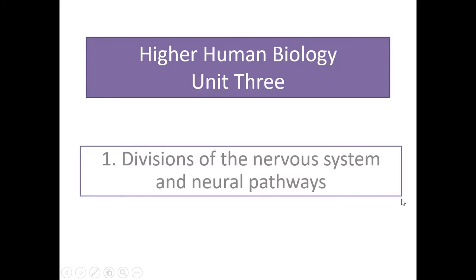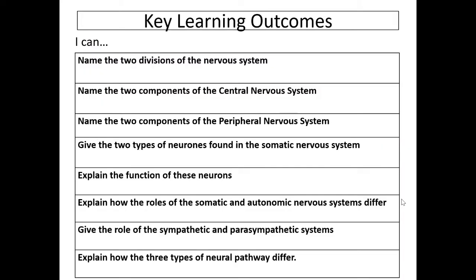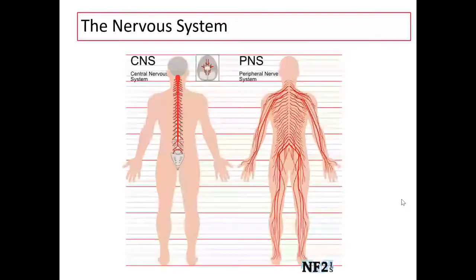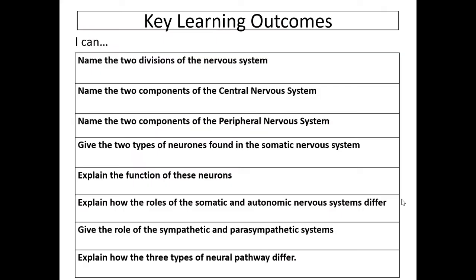This video covers Higher Human Biology Unit 3, Criteria 1: Divisions of the Nervous System and Neuropathways. First we look at the key learning outcomes. We'll be able to name the two divisions of the nervous system, name the components of the central nervous system, name the two components of the peripheral nervous system, give the types of neurons found in the somatic nervous system, explain the function of those neurons, explain how the roles of the somatic and autonomic nervous systems differ, give the role of the sympathetic and parasympathetic systems, and finally look at the three different types of neural pathway.